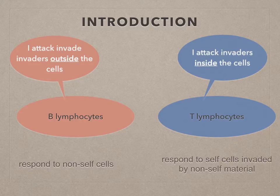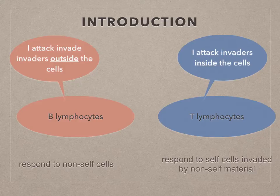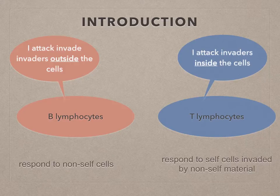In the last topic, we discussed B lymphocytes and how they're involved in humoral immunity — they secrete antibodies. B lymphocytes respond to non-self cells, so these are foreign cells or foreign products. T lymphocytes, on the other hand, respond to the organism's own cells that have been invaded by non-self material. They also respond to transplanted material which is genetically different.